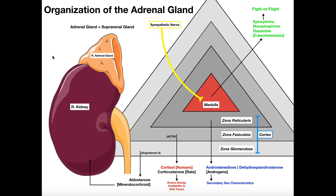In this video we're going to talk about the organization of the adrenal glands. This is a topic that's really important to understand in a variety of settings such as the endocrine system, because of course the adrenal gland releases a lot of hormones. But also when you talk about other body systems such as the kidneys, one of the hormones — aldosterone — acts on the kidneys, so the structure of the adrenal glands relates to its function.